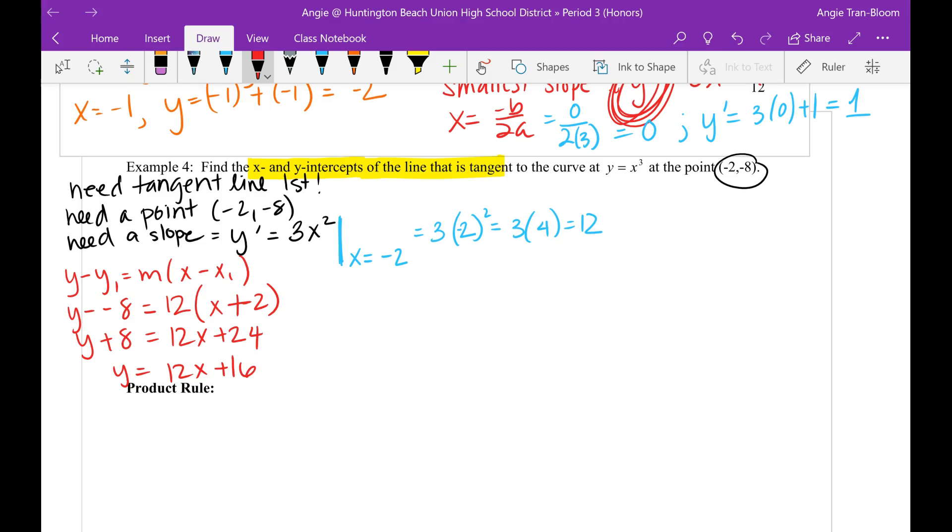It doesn't say find the tangent line. It says find the x and y intercepts. So x intercept of the tangent is when y is 0. So 0 equals 12x plus 16. Move 16 over, negative 16 equals 12x. Divide both sides. So x equals negative 16 over 12. You can't leave it like that. You have to simplify that down to negative 4 over 3. So that is my x intercept.